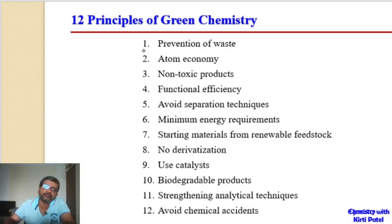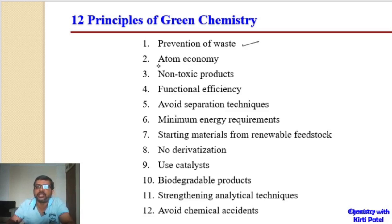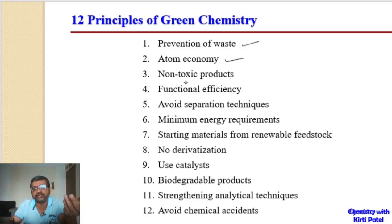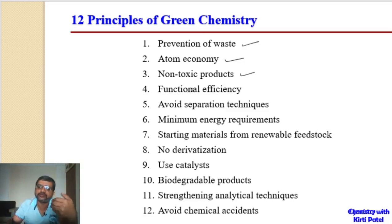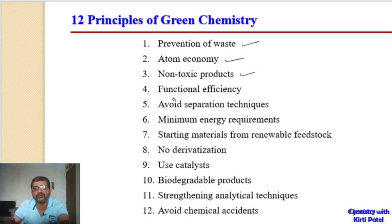We have 12 principles. The first principle states prevention of waste — waste should be prevented as far as possible. The second principle talks about atom economy — the maximum amount of reactant must be incorporated into the product. The third principle states non-toxic products — the products that we are manufacturing must be non-toxic.